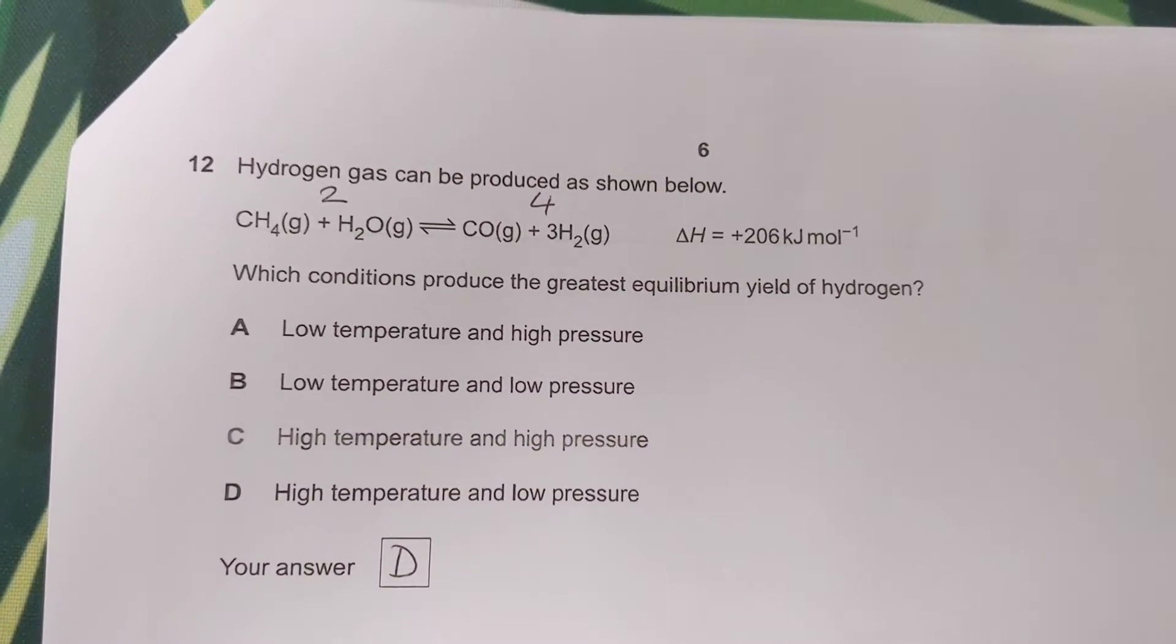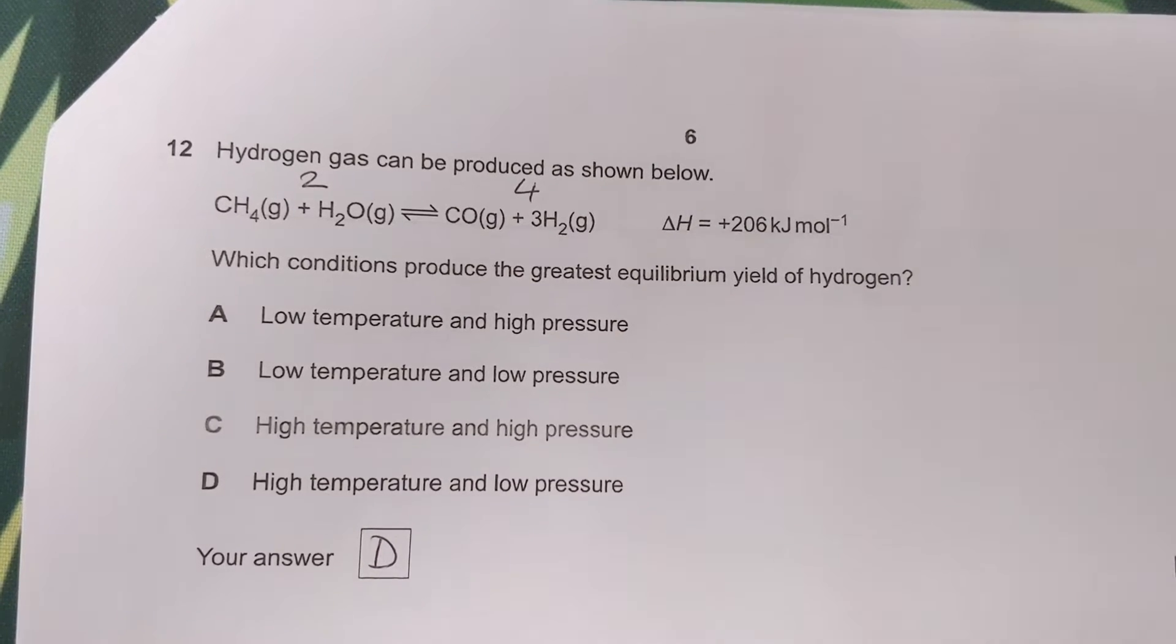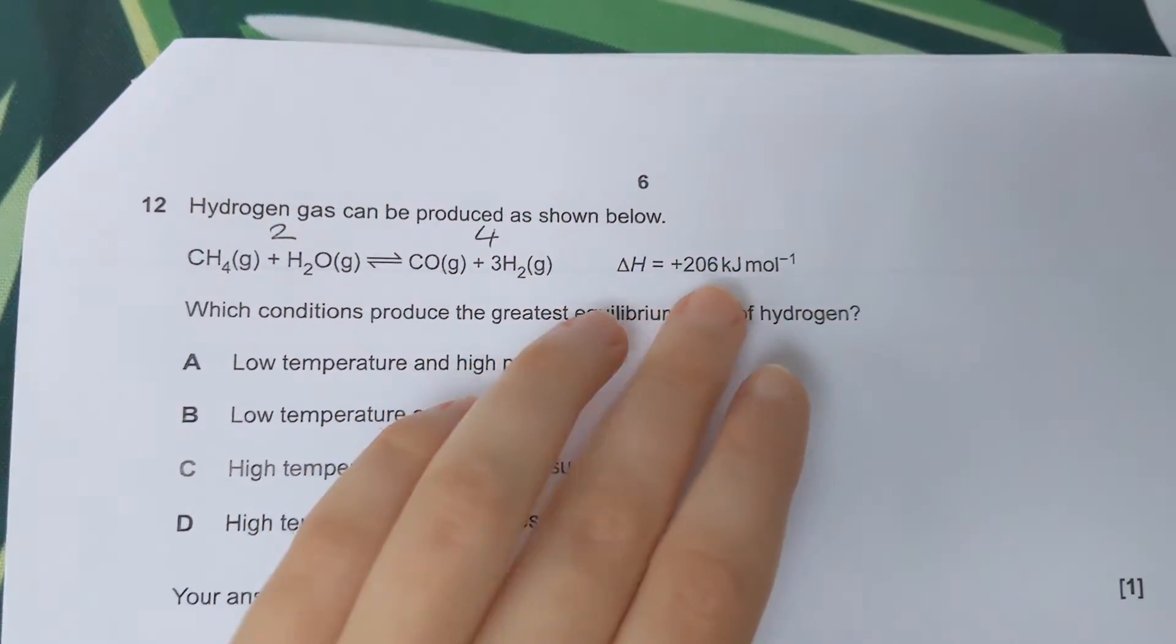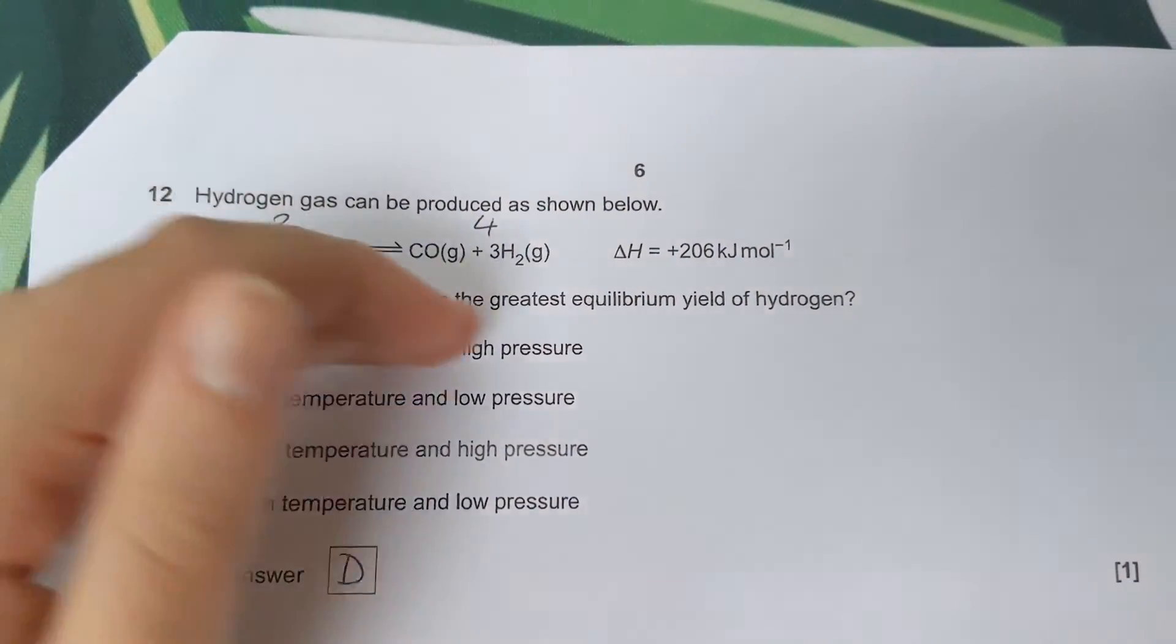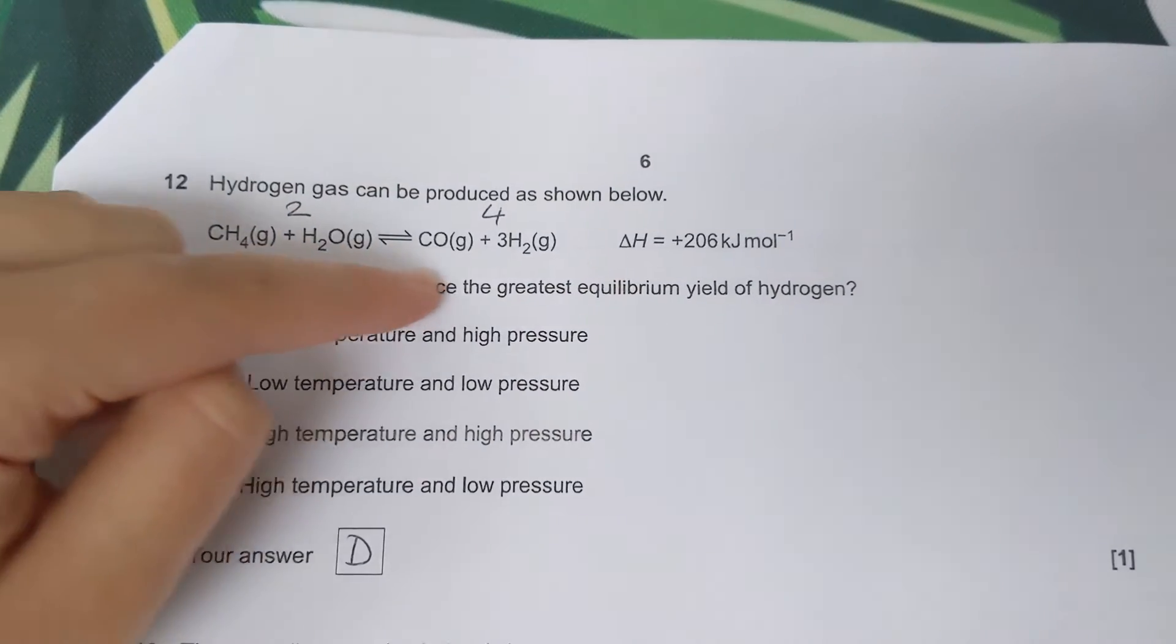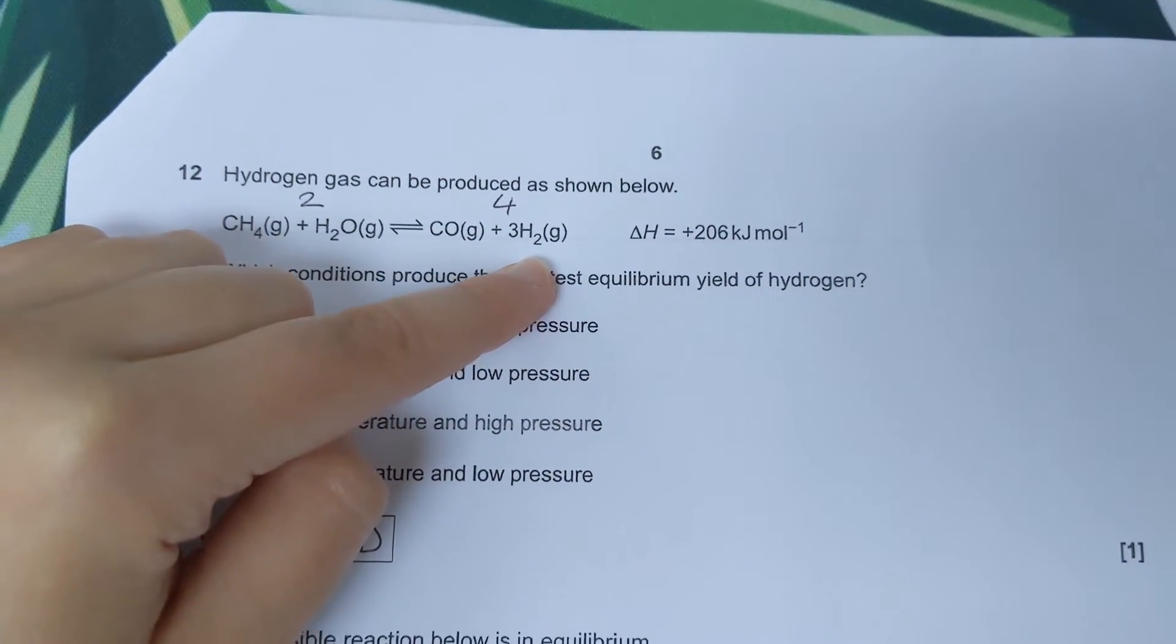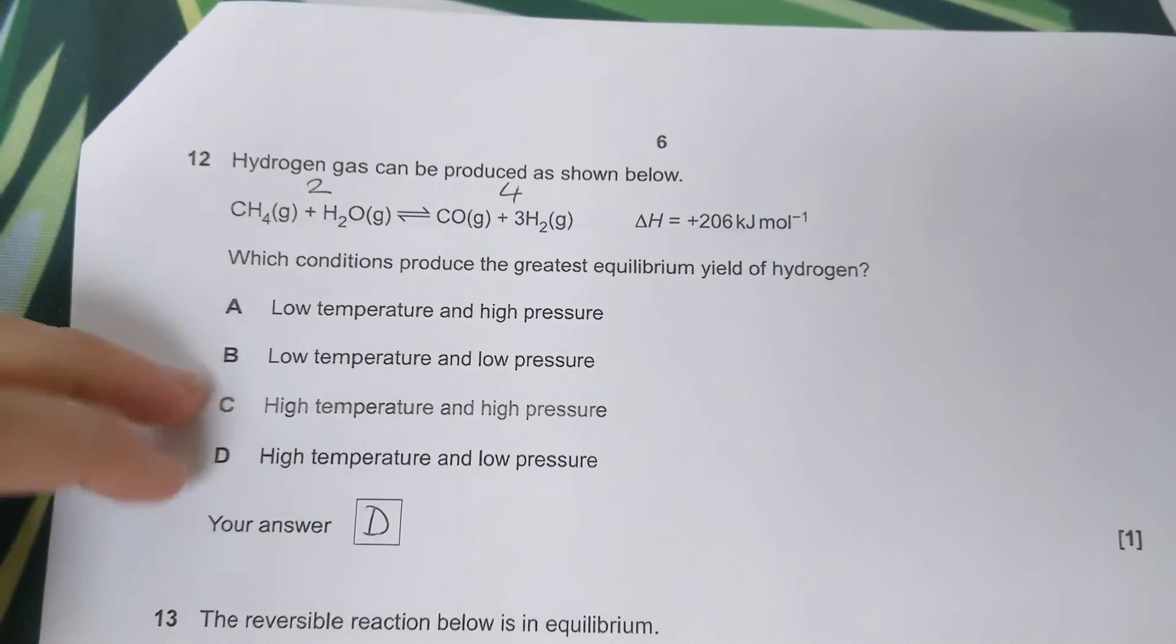Next question: hydrogen can be produced as shown below. Which conditions produce the greatest equilibrium yield of hydrogen? This equation has a positive delta H that tells us this reaction is endothermic in the forward direction. That means if we want to shift the equilibrium to the right, we need to increase the temperature for it to move in the endothermic direction. So that narrows it down to C or D.